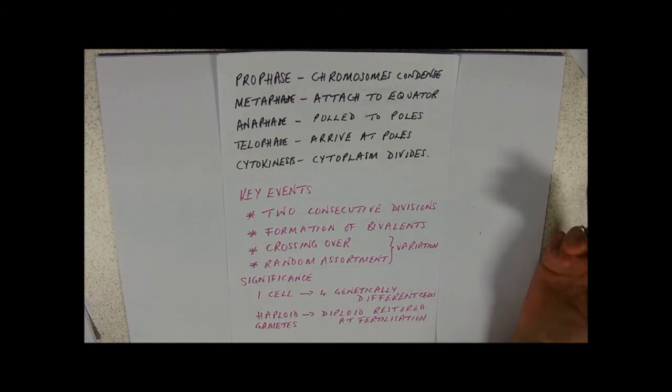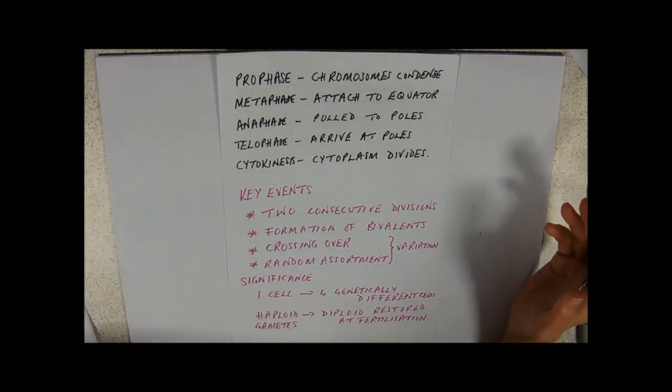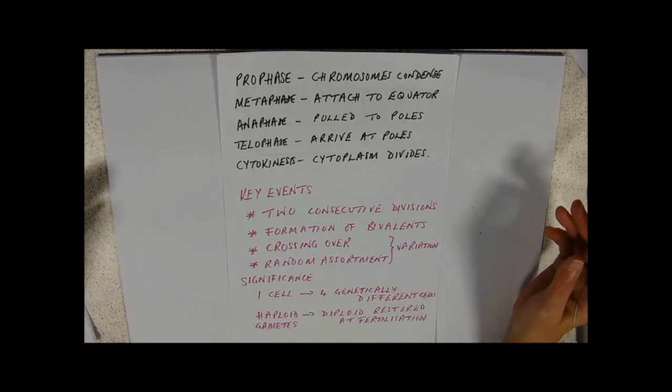So, significance then of meiosis. Why do we bother with meiosis? First of all, you need to know that we're making one cell into four genetically different cells. And again, just like with mitosis, you need to say that word genetically. They're genetically different. They have different alleles in them.